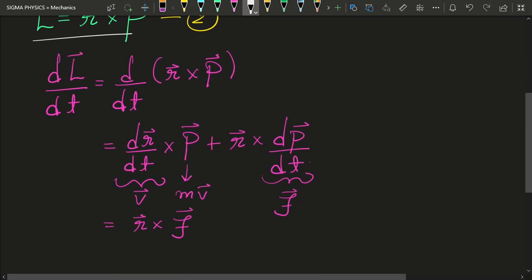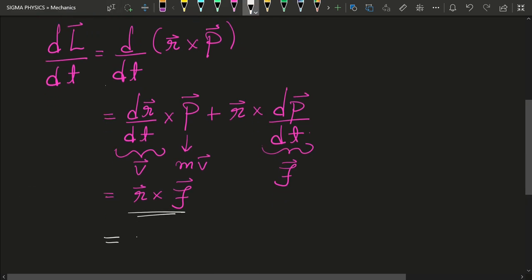Here we have a quantity that looks like the position vector crossed with force and hence we could have called it the angular force. But we decided to call it the torque and denote it with the Greek letter tau. So tau is torque.